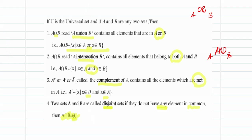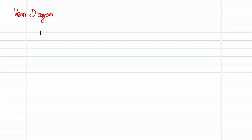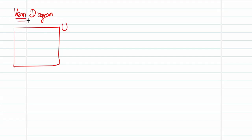Now we will see how these things work using numerical examples for better understanding. The easy way to grasp all these things is using a pictorial representation, because a brain can process things faster when seeing pictures. We use something called Venn diagrams to represent these relations. The universal set is usually represented by a square or rectangle containing all elements.